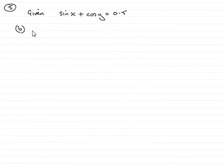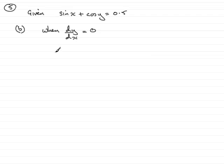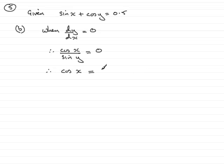Now in part 5b, we're asked to find the coordinates of the points when dy/dx equals 0. Remember from part a that dy/dx was cos x over sin y. So therefore, cos x over sin y must equal 0. If I multiply both sides by sin y, that's going to mean that cos x equals 0.